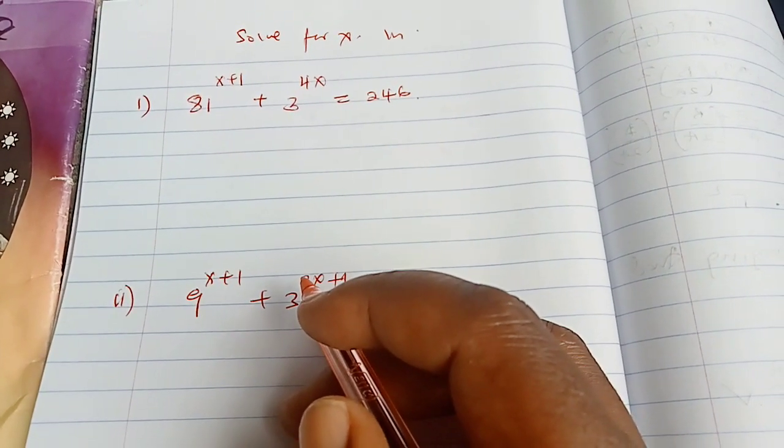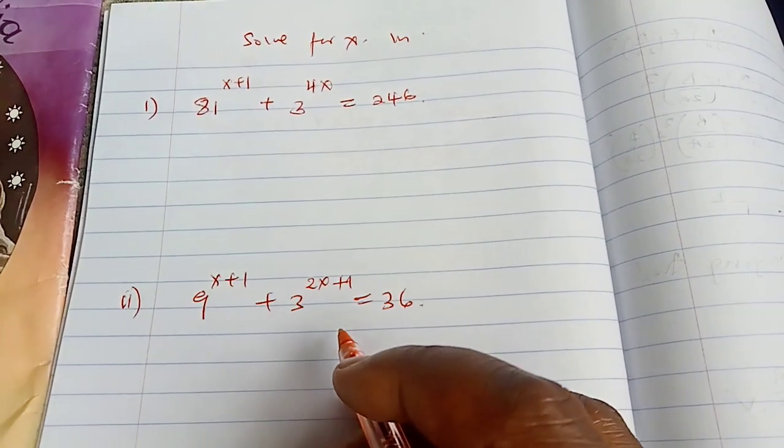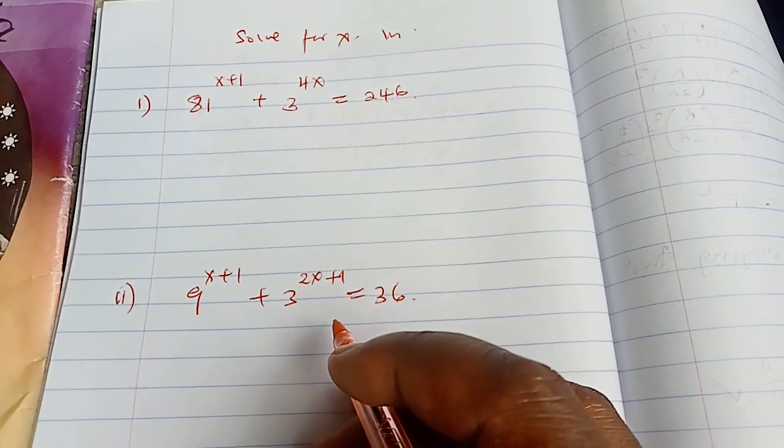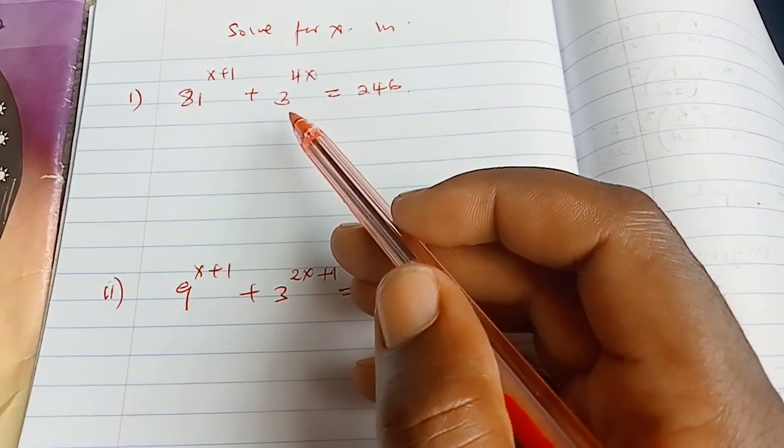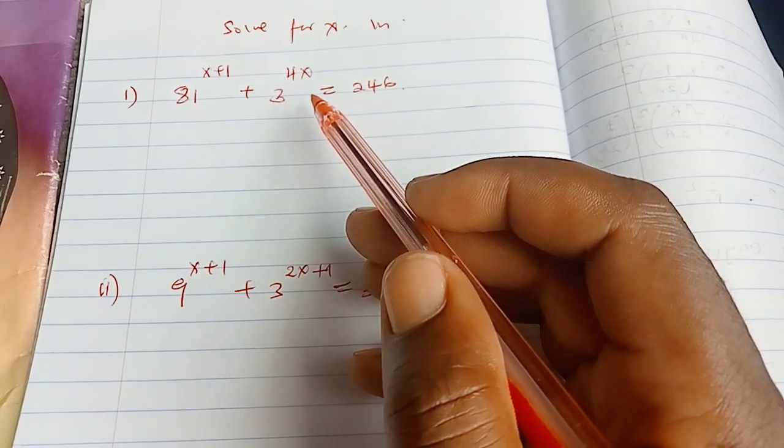Hi, welcome viewers to this video on mathematics. We have questions from indices and the first one says 81 to the power of x plus 1 plus 3 to the power of 4x equals to 246.